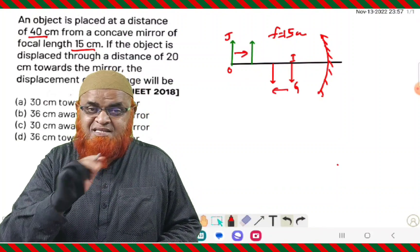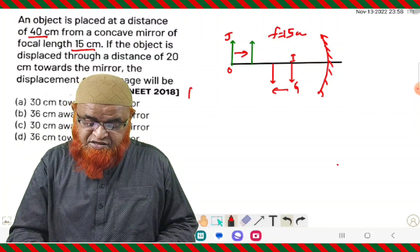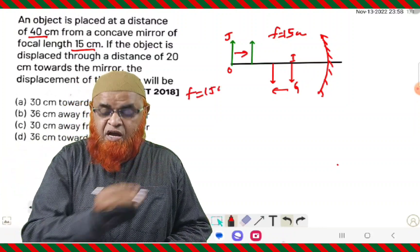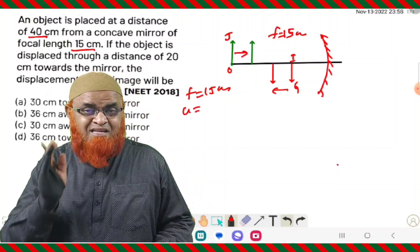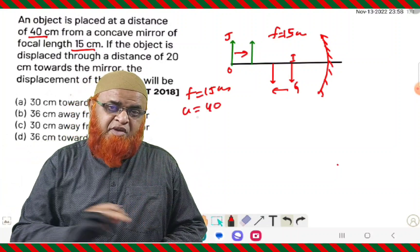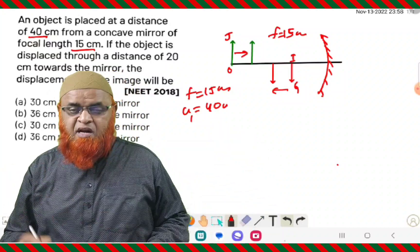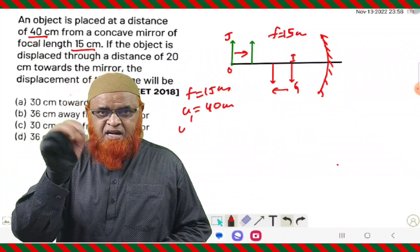When the object is shifted towards the right, towards the mirror, then the image is shifted away from the mirror. That is the concept here. It is correct that the image should be shifted away from the mirror when the object is shifted towards the mirror. Then how much is it going to be shifted?